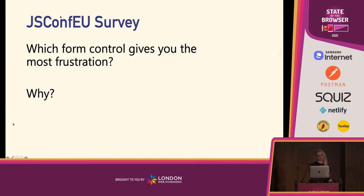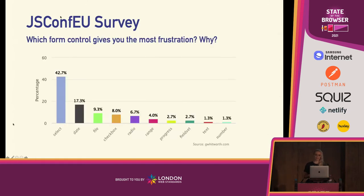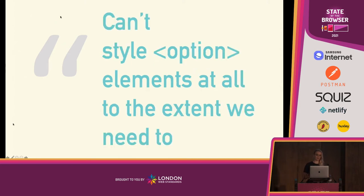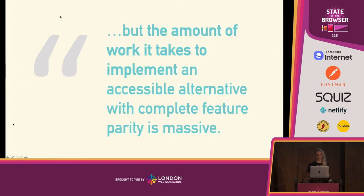Greg shared an amended survey with JSConf EU attendees in 2019 and asked two additional questions: which form control gives you the most frustration and why? Select clearly stole the show with nearly 50% of respondents, and date was the next closest at 17.3%. Some of the verbatims he got: "Select requires hacky tricks." "Can't style option elements at all to the extent we need to." "The amount of work it takes to implement an accessible alternative with complete feature parity is massive."